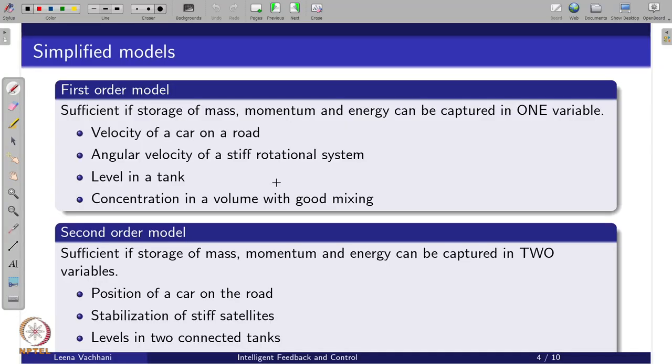If we have simplified models such as first order models, these are certain other examples. In the last video we saw that if I have a true first order model or true second order model, I should be able to apply PI control or PID control. Which are those first order models? These are typically when storage of mass, momentum, and energy is captured in one variable, then it becomes a first order model.